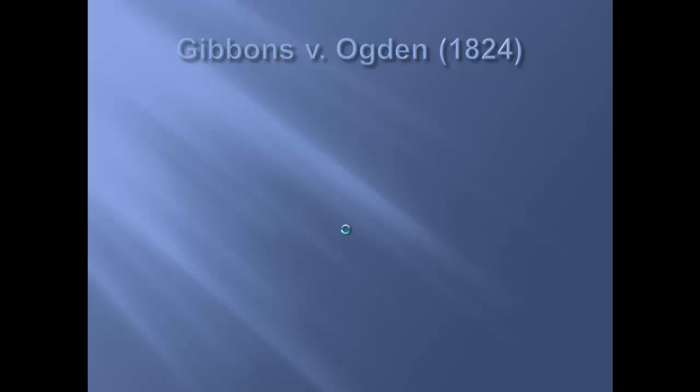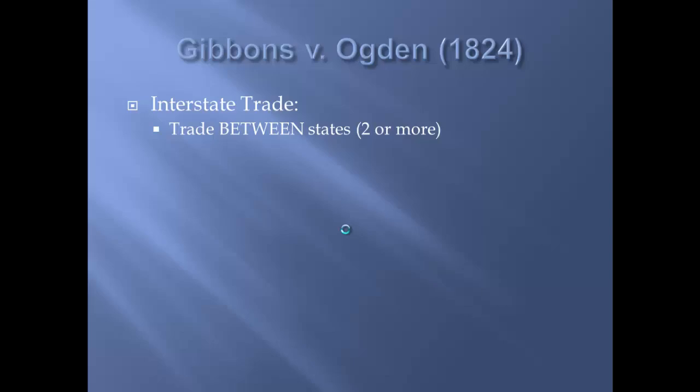In 1824, one of the more famous court cases: Gibbons versus Ogden. We need to understand two key ideas first. Interstate trade is trade between states — two or more. So if New York and Pennsylvania are trading with each other, that is interstate trade. Intrastate trade is trade within a state — only one. So if I live in Buffalo and sell goods to Rochester, New York, that is intrastate trade. But if I sell goods from Buffalo, New York to Cincinnati, Ohio, that is interstate because it is between states.